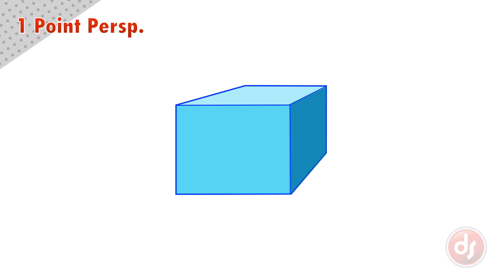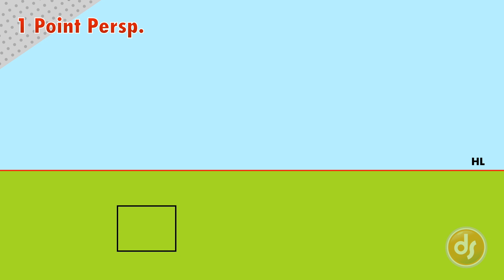An object will be in one point perspective when a flat side of the object is facing the viewer. So we can start by drawing a flat square or rectangle. Then we pick a single point on the horizon line to converge our lines to. This will be our one point vanishing point. Next we can take the corners of our box to the vanishing point. The lines that moved away from us are our Z line systems, and the front plane of the box is made up of X and Y line systems.